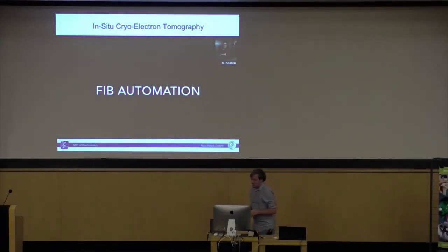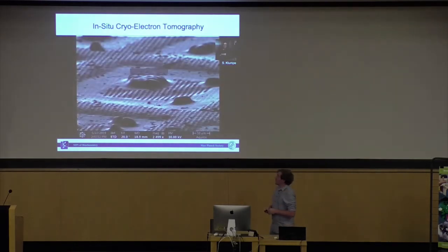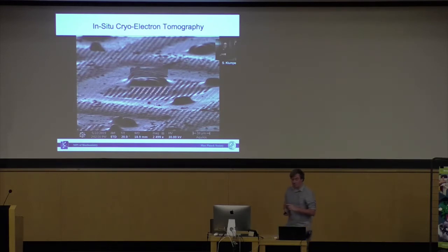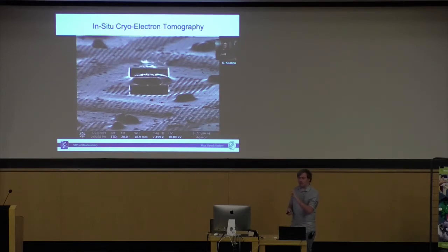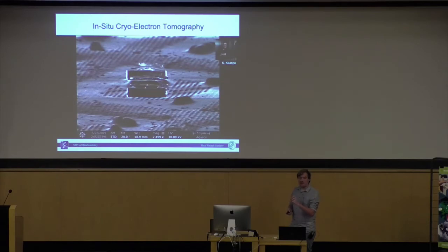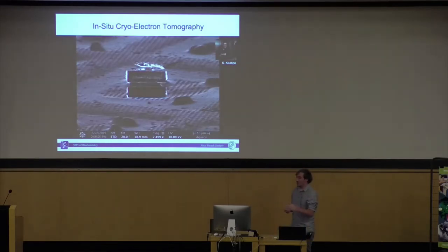What I find works best personally is to let the automation do everything but the very final fine milling, both for our software and Autotem — because I need lamellas at 150 nanometers and below, ideally 140 and below. That final step is still best done manually in my opinion, but hopefully soon we'll have solutions that regularly give you that.